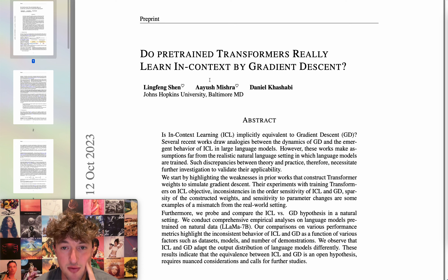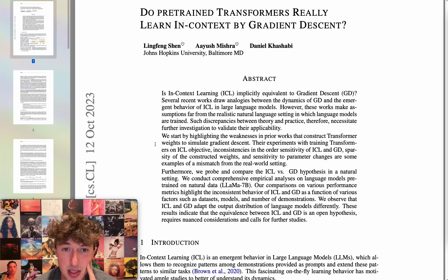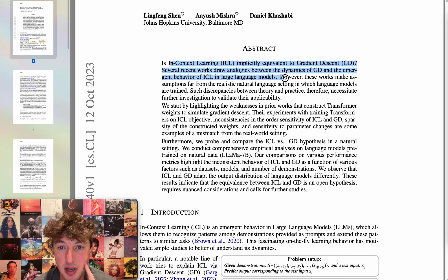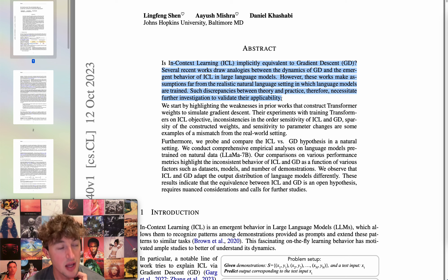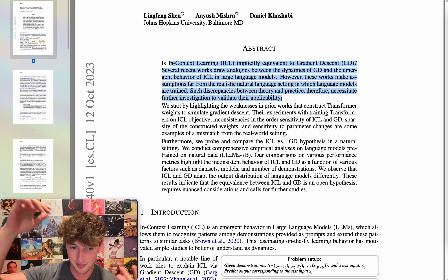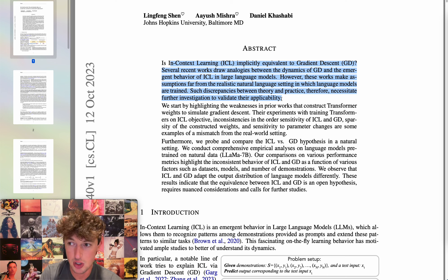Do Pre-Trained Transformers Really Learn In-Context by Gradient Descent? Is in-context learning implicitly equivalent to gradient descent? Several recent works draw analogies between the dynamics of GD and the emergent behavior of ICL in language models. However, these works make assumptions far from the realistic natural language setting in which large language models are trained. If you consider the embedding space as the actual loss landscape, then you're just using an operator on that — you just have operators on the loss landscape.